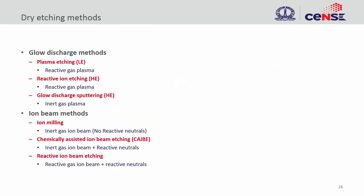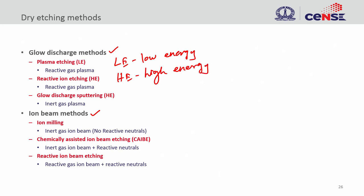Let us look at the different methods available for dry etching. The dry etch process can be done two ways: one is the glow discharge method and the other is the ion beam method. In the glow discharge method, we use plasma etching — we create reactive plasma gas, or we can do reactive ion etching which has high energy. Here low energy (LE) and high energy (HE) variants exist. Glow discharge sputtering is again a dry etch process with high energy.